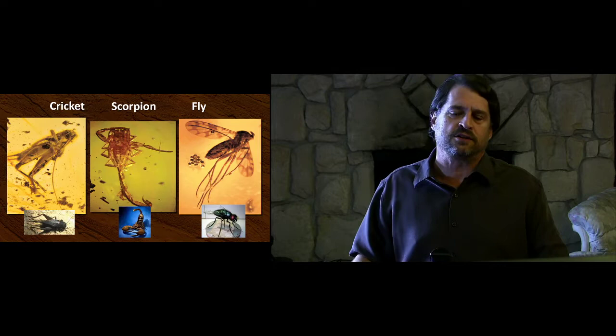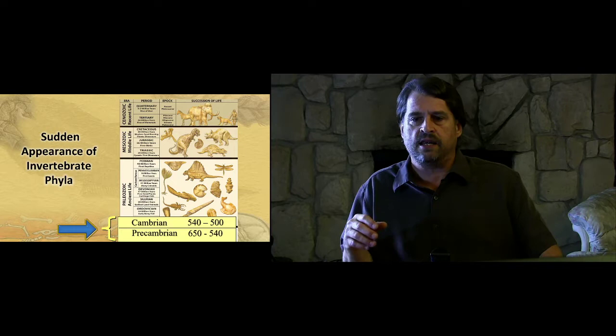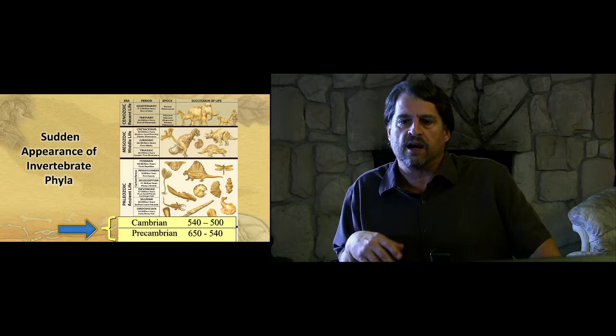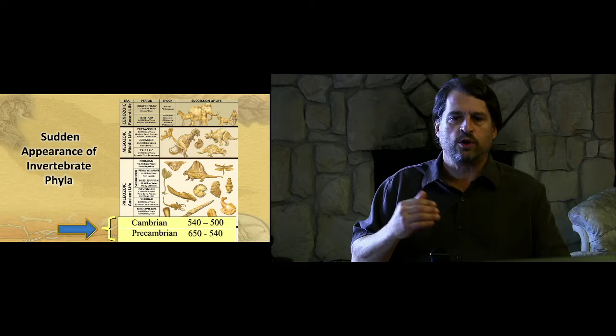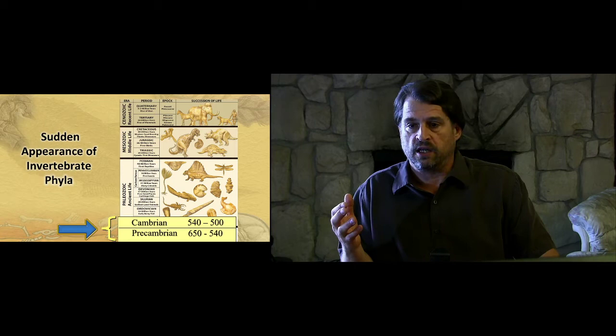Arguably the biggest problem for the evolutionary interpretation of the fossil record is what we call the Cambrian explosion. In the fossil record, life appears so suddenly that a Time magazine article calls it 'evolution's big bang,' with the subtitle: 'New discoveries show that life as we know it began in an amazing biological frenzy that changed the planet almost overnight.' Rather than the slow and gradual accumulation of organisms Darwin predicted, what we see is a sudden explosion appearing in one geologic era.